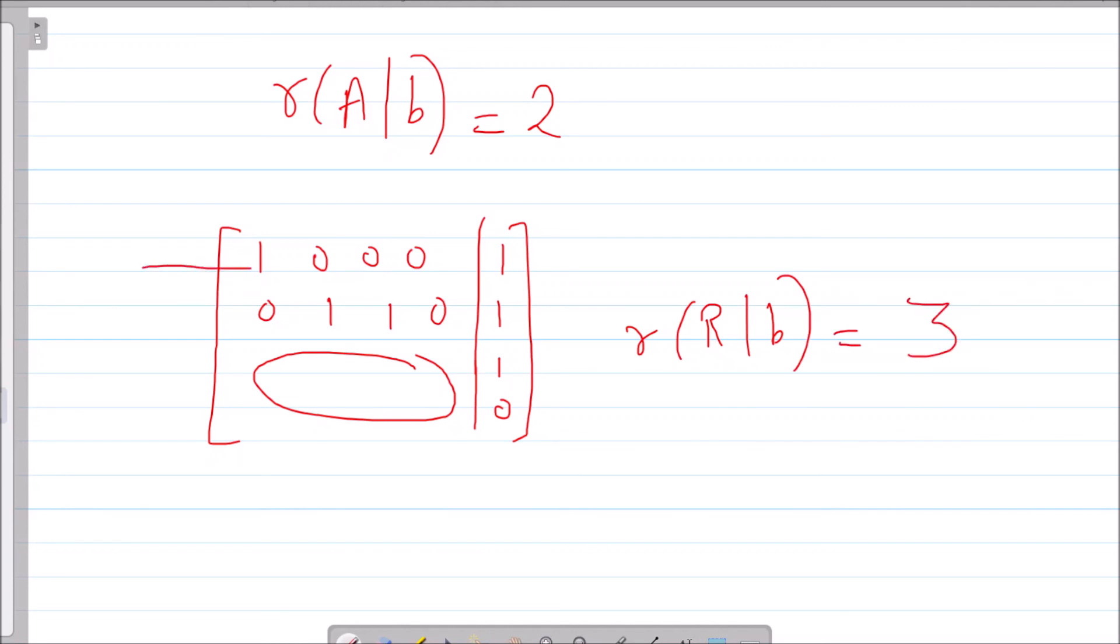Rank([R|b]) = 3 because there are three non-zero rows. So rank([A|b]) need not equal rank([R|b]). Therefore, statements P and Q are both false.